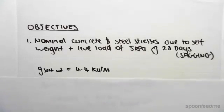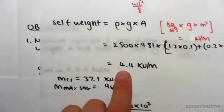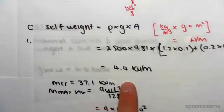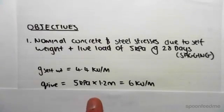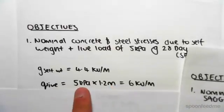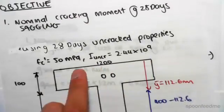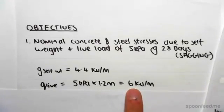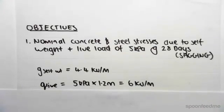The self-weight UDL is 4.4 kilonewtons per meter - we saw this in the previous video. Now the live load is 5 kPa. To find the UDL, all we need to do is look at our section and multiply the 5 kPa live load by the width of our section, which is 1.2 meters, which will give us 6 kilonewtons per meter.